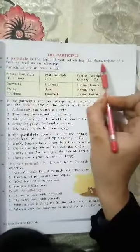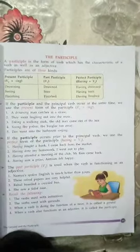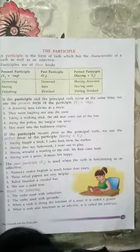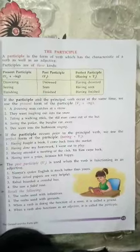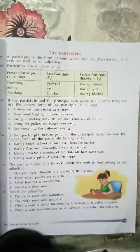Now we come to the participle. What is meant by participle? A participle is a form of a verb which has the characteristics of a verb as well as an adjective.